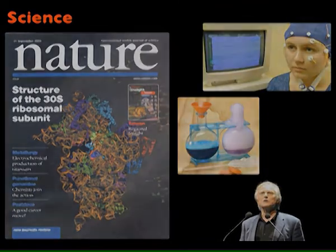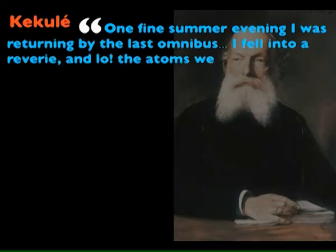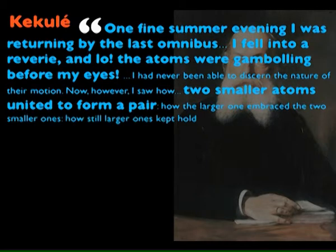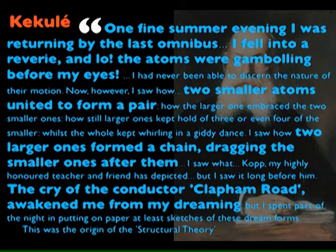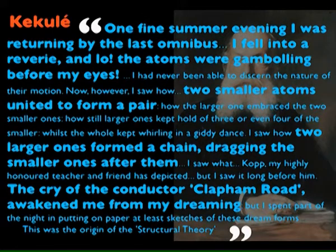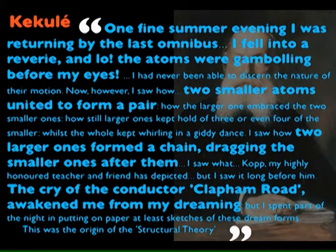It came from Kekulé, who wrote: 'One fine summer evening, as I was returning by the last omnibus, I fell into a reverie. And lo, the atoms were gambling before my eyes. Two smaller atoms united to form a pair; two larger ones formed a chain, dragging the smaller ones after them. The cry of the conductor awakened me from my dreaming.' He went home and sketched the structural theory down. This has become the basis of how we think about organic chemistry — how chemicals fit together.